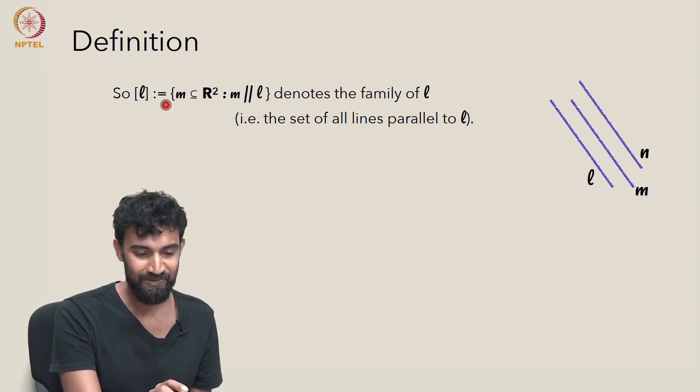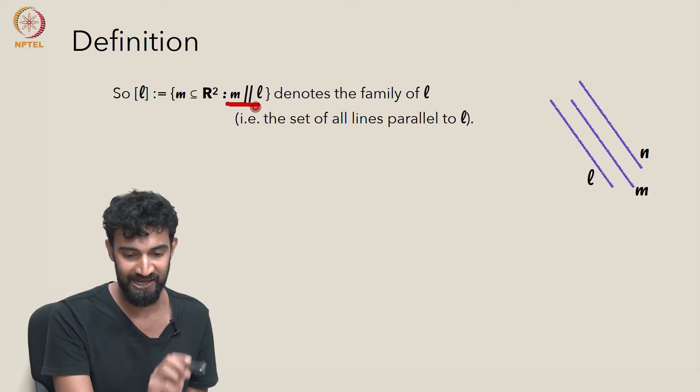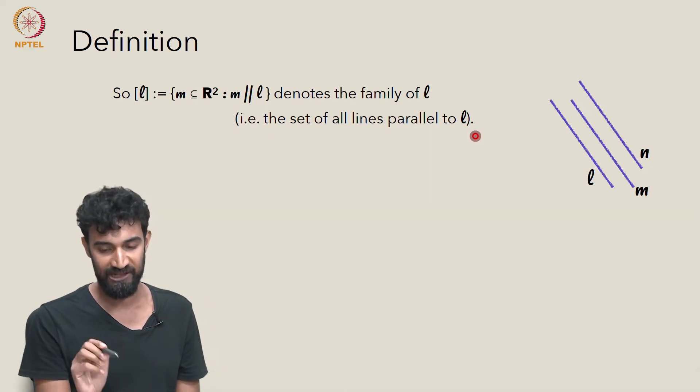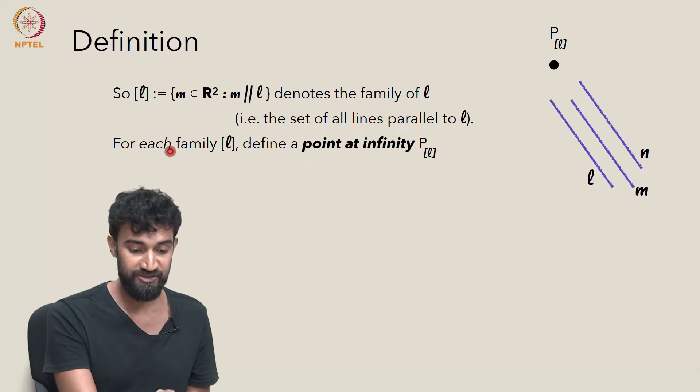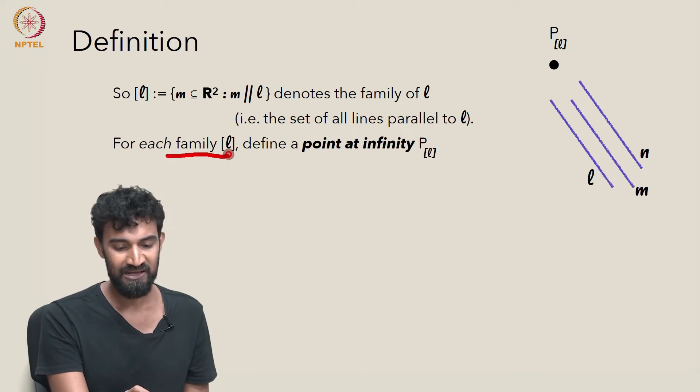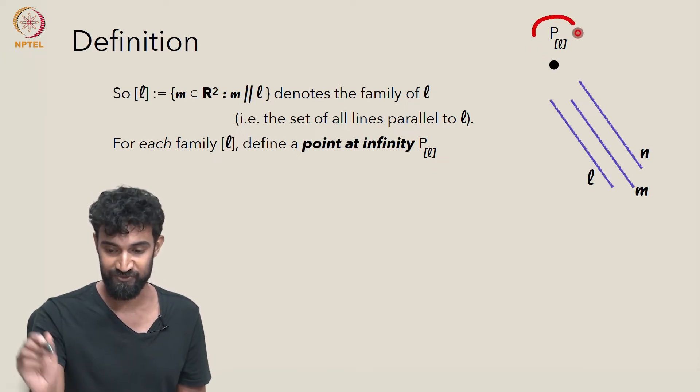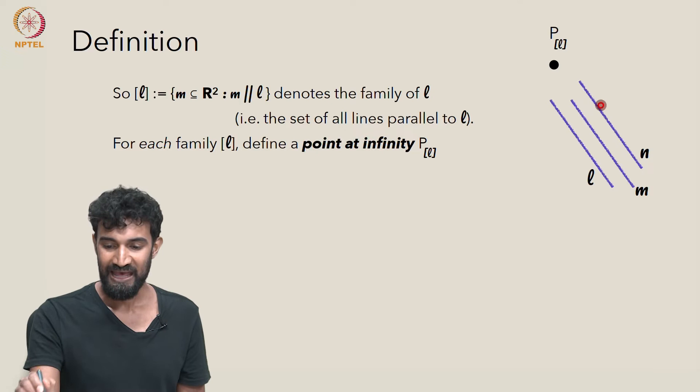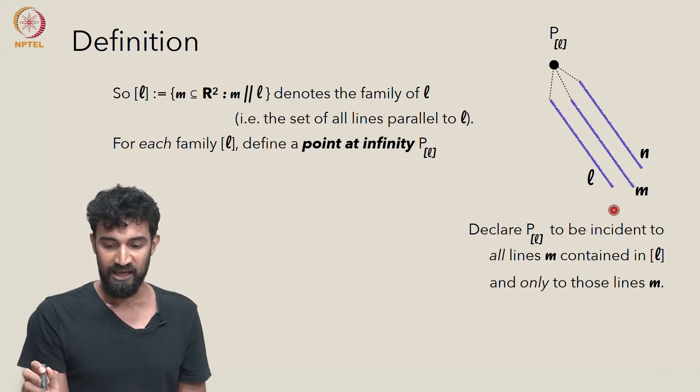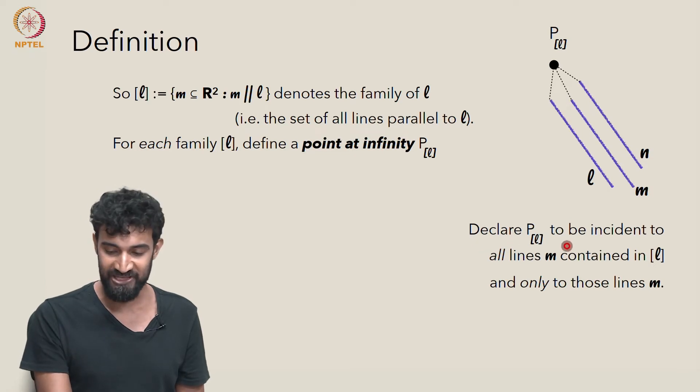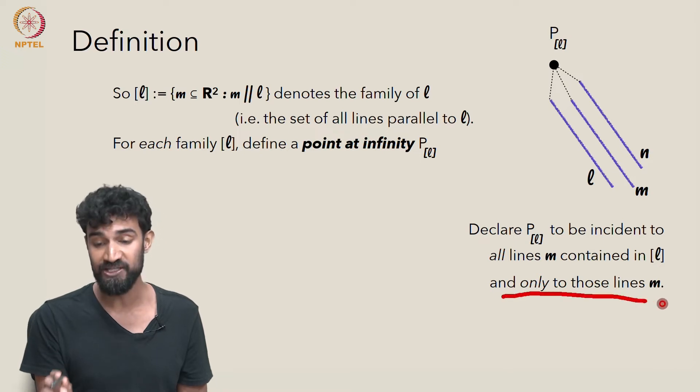So bracket L is defined to be the set of all lines in R², M within R², such that M is parallel to L. For each such family bracket L, let's define a point at infinity, PL, which I've drawn here. Here's my family, and I'm just adding in a point at infinity associated to that family. And I'm going to declare that PL is incident to all lines M in this family, and only to those lines M.